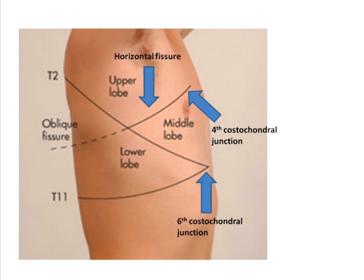This oblique fissure divides the lower lobe from the upper and the middle lobe. Next you need to draw the horizontal fissure, which starts at the fourth costochondral junction as shown in the diagram, and is drawn laterally until it crosses the already drawn oblique fissure. This horizontal fissure divides the upper lobe from the middle lobe, giving you the right lung divided into the upper lobe, middle lobe, and lower lobe.